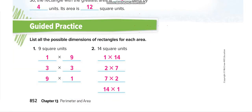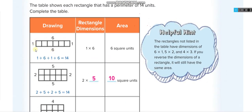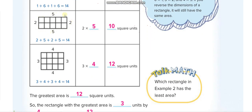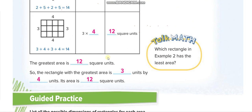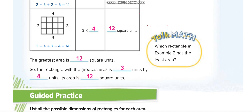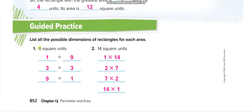On the next page, if we add all the sides — 1 plus 6 plus 1 plus 6 — the perimeter is 14. The area is 1 times 6 equals 6 square units. We add all sides to find perimeter and multiply two sides to find area. From this table, the greatest area is 12 square units, which is the 3-unit by 4-unit rectangle.